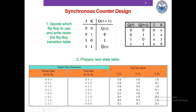This problem has 6 K-maps to determine J2, K2, J1, K1, J0, and K0 with respect to flip-flop outputs Q2, Q1, and Q0. We have one K-map for J2, one for K2, one for J1, one for K1, one for J0, and one for K0.